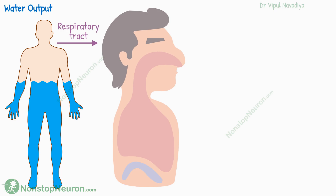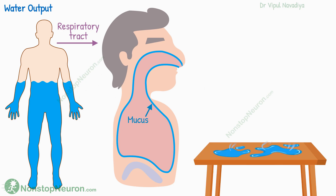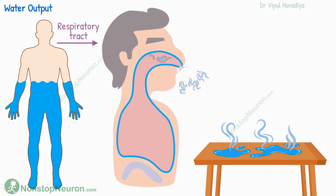Next, water loss through the respiratory tract. The entire airway has a mucus coating. Just like water on any surface evaporates, it evaporates from this mucus too, so the air in the respiratory tract gets moisturized. With breathing, this moisturized air keeps getting exhaled and new, drier air keeps coming in, so evaporation from the respiratory mucus keeps happening all the time.